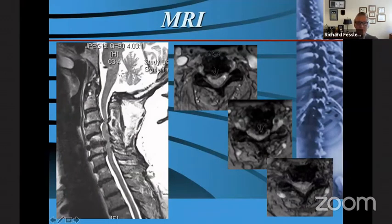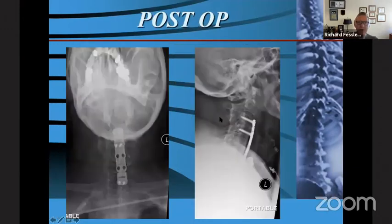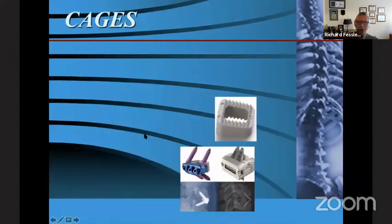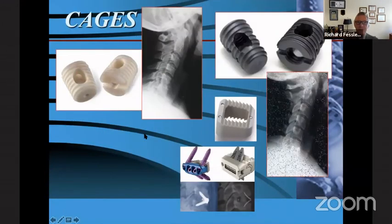Another patient with severe myelopathy and a very tight canal — using this plate for a multi-level vertebrectomy with bicortical purchase. The plate can now translate along itself rather than along the vertebral bodies.